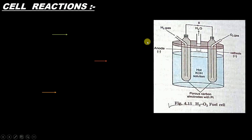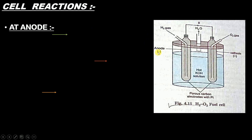Let's understand the cell reactions. First, we will look at the reaction at the anode. At the anode, oxidation takes place. Oxidation is nothing but the loss of electrons. At the anode there is H2 gas, so H2 gas is going to lose electrons.